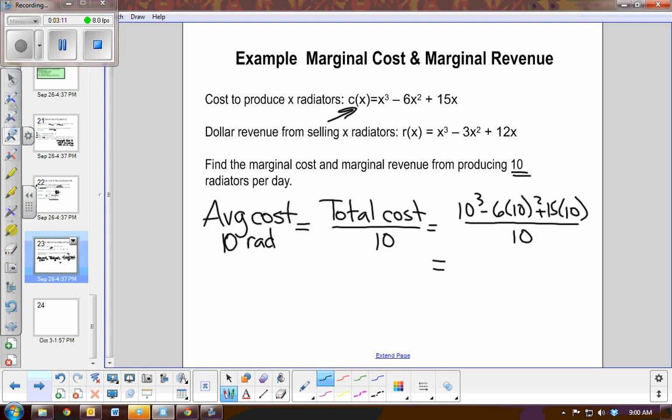When we do the mathematics, we end up with $770 as the total cost divided by 10. So it costs us, when we produce 10 radiators, on average, each radiator costs $77. That's a good number to keep in mind as I look at marginal costs and revenue. Average cost when making 10 is $77 per radiator.